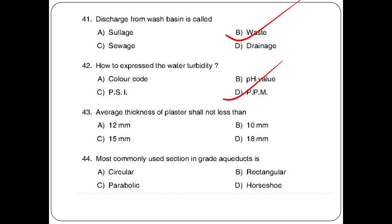Average thickness of plaster shall not be less than — options: 12 mm, 10 mm, 15 mm, 18 mm. The answer is option B: 12 mm. Most commonly used section in grade aqueducts — options: circle, rectangle, parabolic, horseshoe. The answer is option B: rectangle.